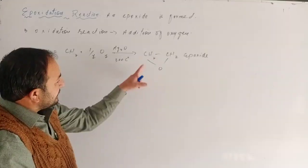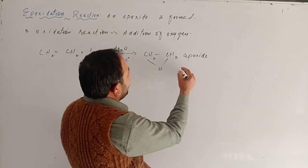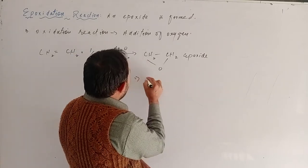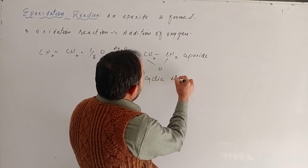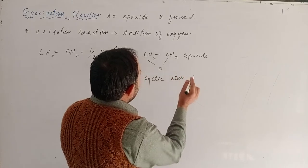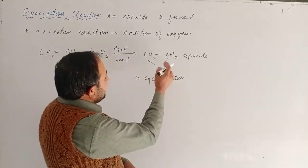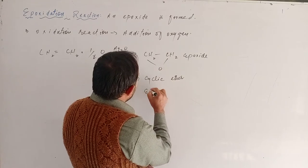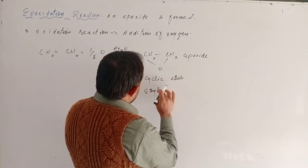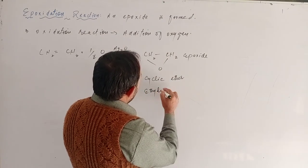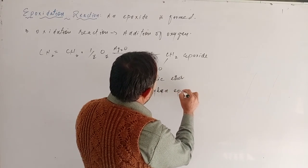If you see this compound, it is a cyclic ether. It is also called ethylene epoxide — what we commonly call ethylene oxide.